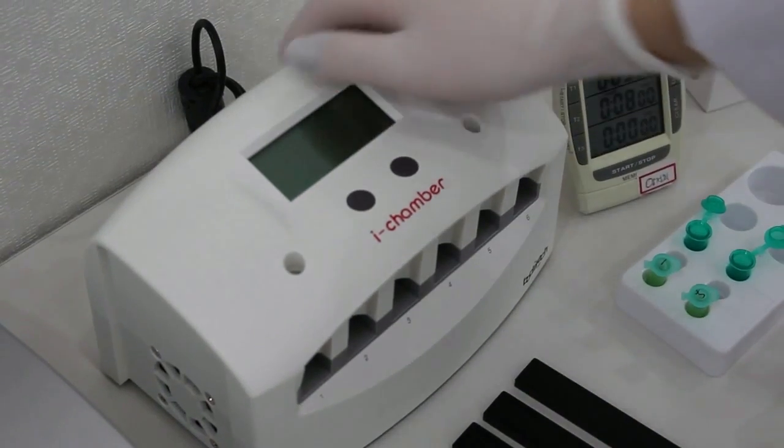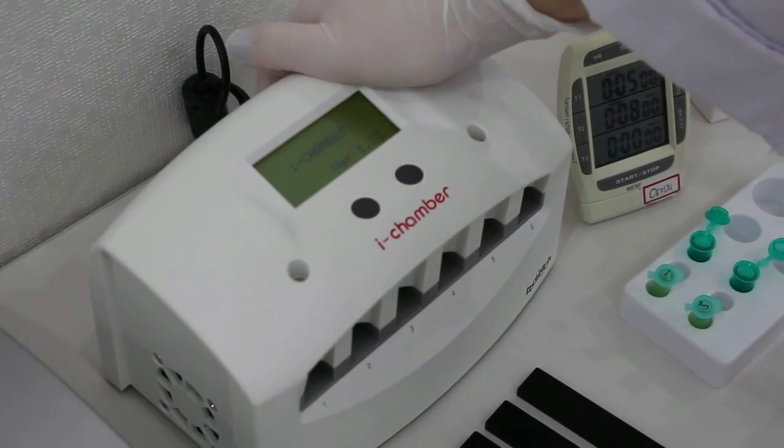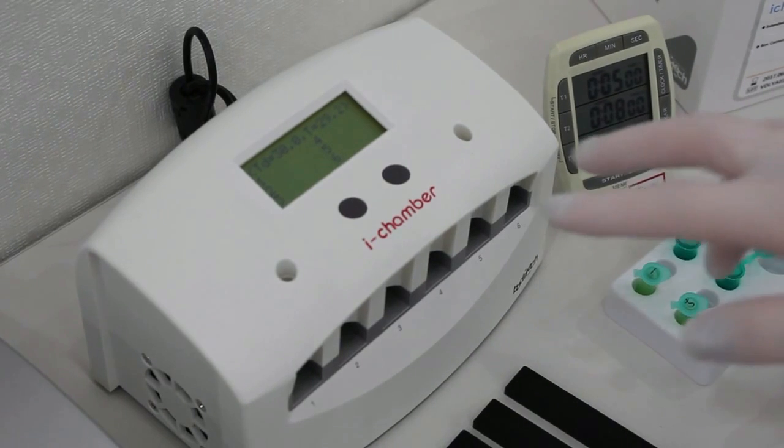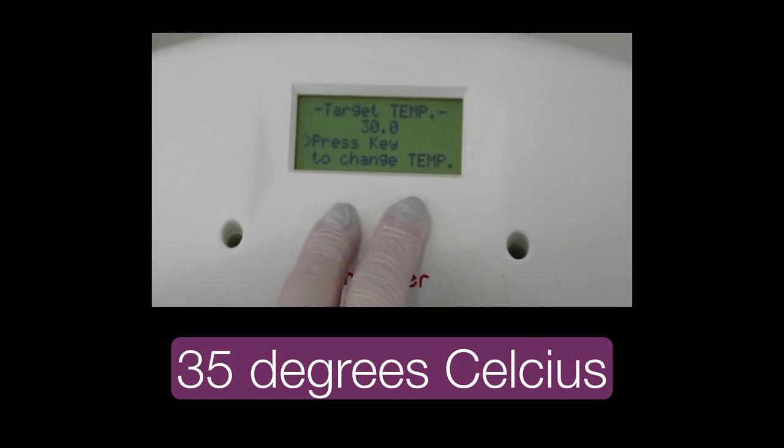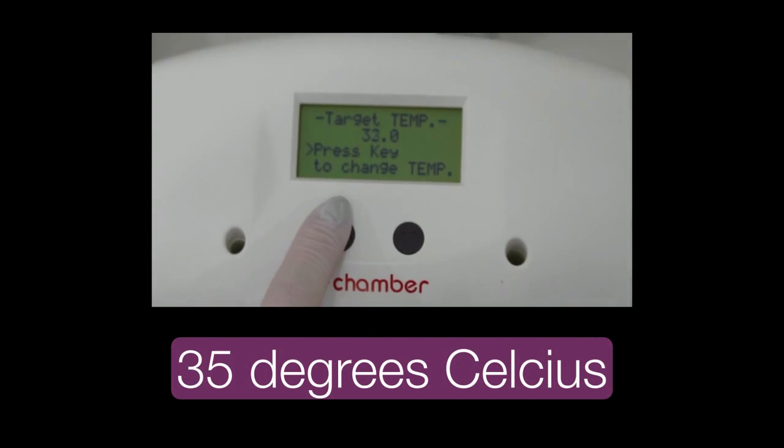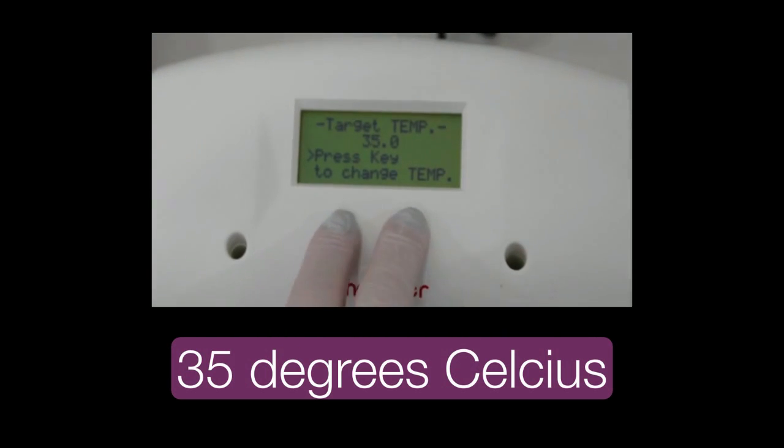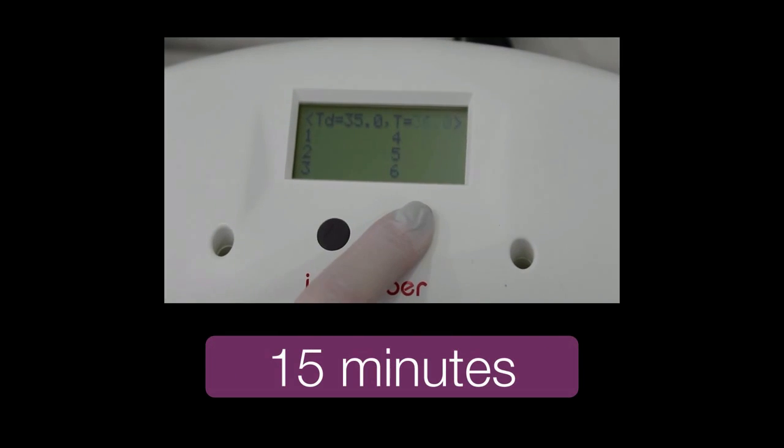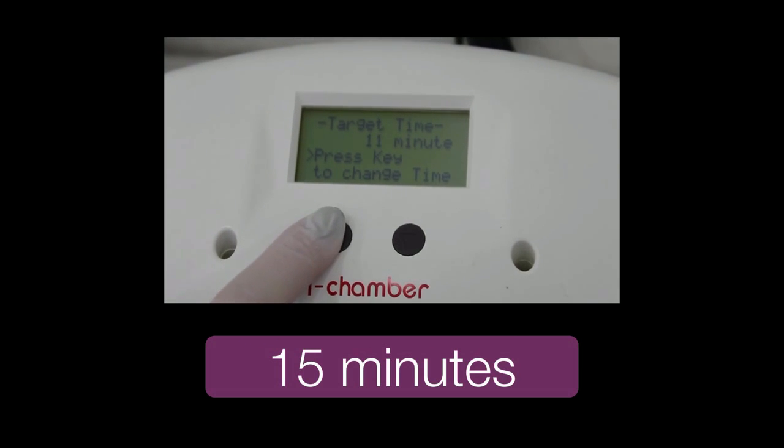Turn on the iChamber and set the temperature to 35 degrees Celsius. To do so, simultaneously press the two buttons on the front of the machine for 5 seconds and adjust accordingly. Simultaneously quick press both buttons to go back to the main screen. Then set the time to 15 minutes. Long press the right button and adjust the time accordingly.